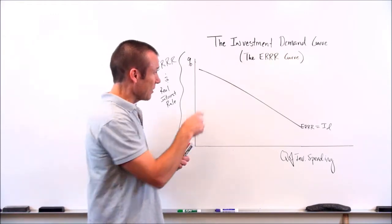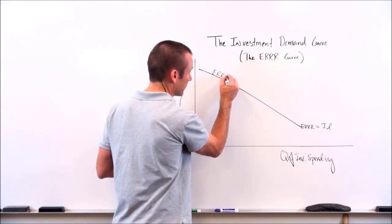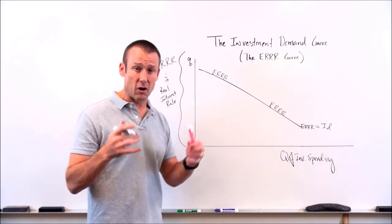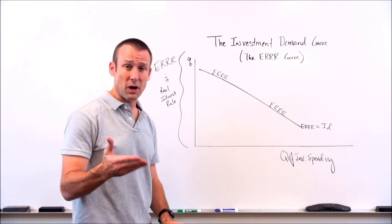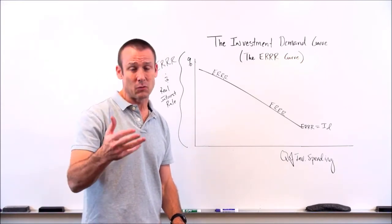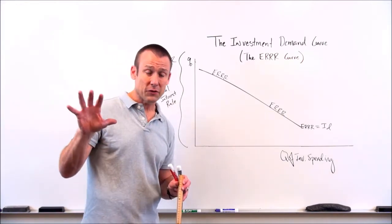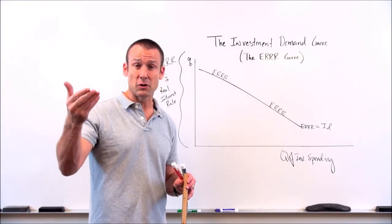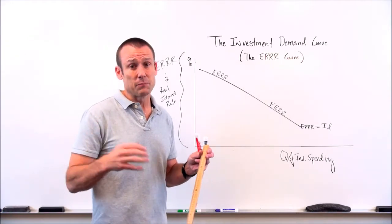All of the dots that make up this line really are my expected real rates of return of my business projects. Which projects are we going to do? What is going to be our quantity of investment spending? That is very much based on what the interest rate is in the financial markets. This is an investment demand curve, so I'd have to go look at the financial markets — otherwise known as the loanable funds market in a macro class — to find the interest rate, because markets determine prices and the interest rate is a price. So I go look at the financial market and find out the interest rate is, say, eight percent.